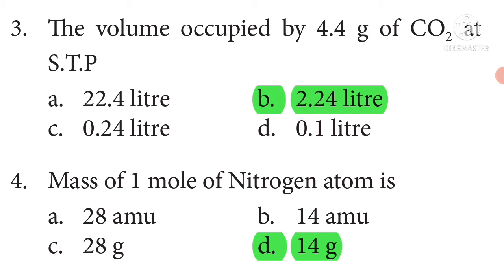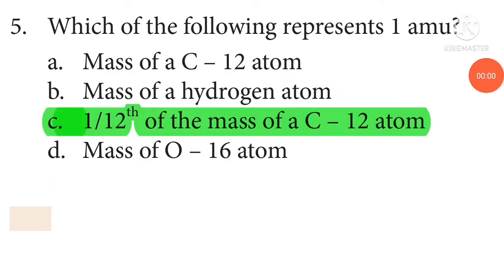Fourth one: mass of one molecule of nitrogen atom is, correct option 14 gram. Which of the following represents 1 AMU? One twelfth of the mass of a carbon-12 atom.